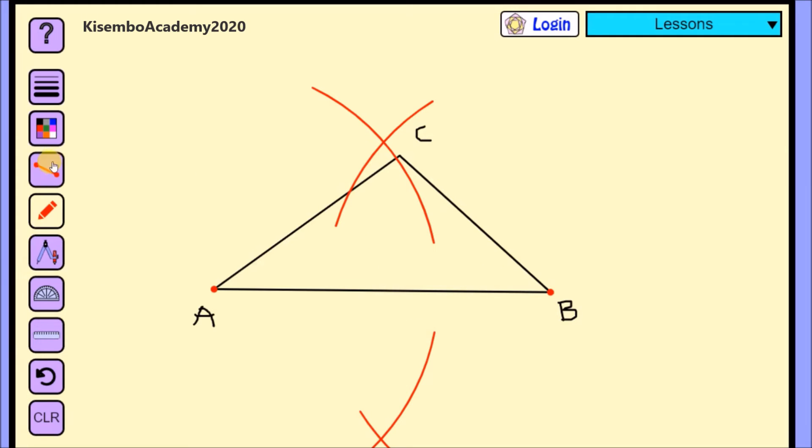So after drawing that line, now that line I have bisected. So after bisecting, I'm going to choose another line, any other line. Let me choose line BC. So I'm going to bisect line BC.